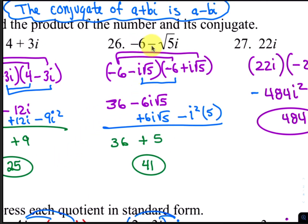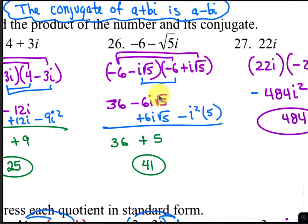The conjugate of negative 6 minus i radical 5 is negative 6 plus i radical 5. Notice that the i is placed in front of the radical, which we should always do. Distributing: negative 6 times negative 6, negative 6 times i radical 5, negative i radical 5 times negative 6, and negative i radical 5 times positive i radical 5. The result is 36 minus 6i radical 5 plus 6i radical 5 minus i squared times 5. The two i terms cancel out, and negative i squared times 5 becomes positive 5. Adding to 36 gives a final answer of 41.